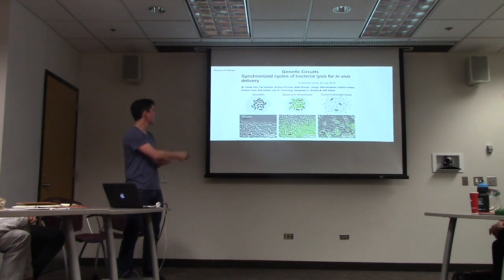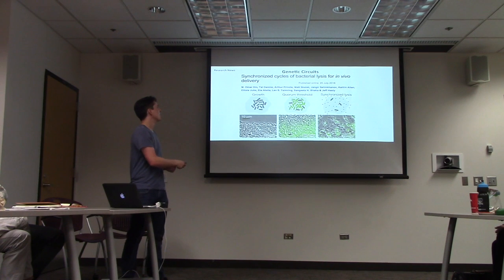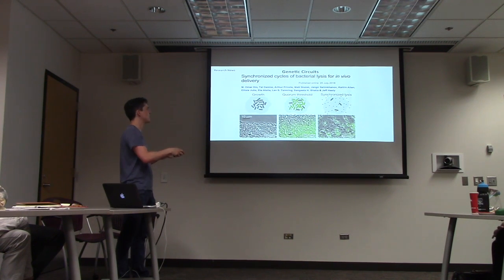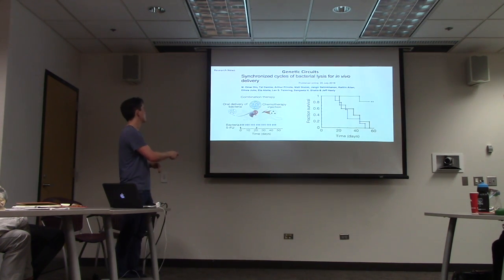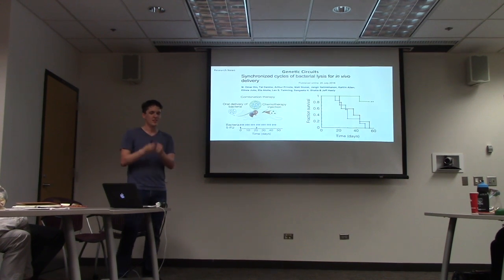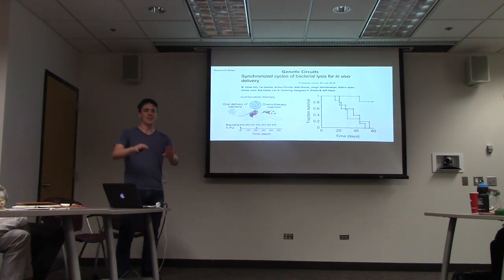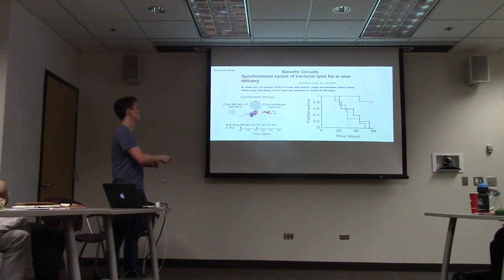And then this lab, Jeff Hastie's lab, did something that I thought was very cool. They engineered salmonella bacteria to basically lyse themselves and reduce it, release a chemotherapeutic when they grow too dense. And they used these salmonella to actually infect tumors and tumor cells in mice. And in combination with chemotherapy, these sort of cycles of lysing salmonella were able to reduce tumor load and actually increase the survival of the mice.